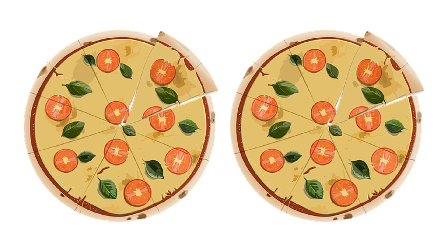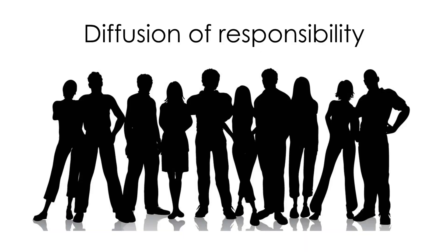An anecdote is that Jeff Bezos famously holds a meeting rule of two pizzas: if there are more people in the meeting than two pizzas could feed, there are too many people in attendance. Too many cooks spoil the broth. In addition to coordination challenges of a big team, the diffusion of responsibility can demotivate team members. When you are the only one to shoulder responsibility, you have no excuse but to contribute everything you have. But when you share responsibility with others, you are likely to assume that others could and will contribute to the team.